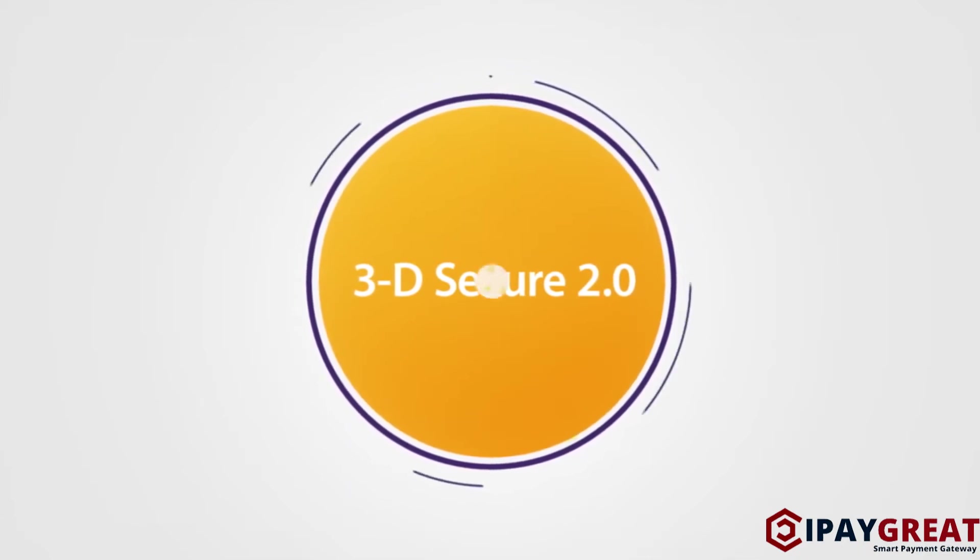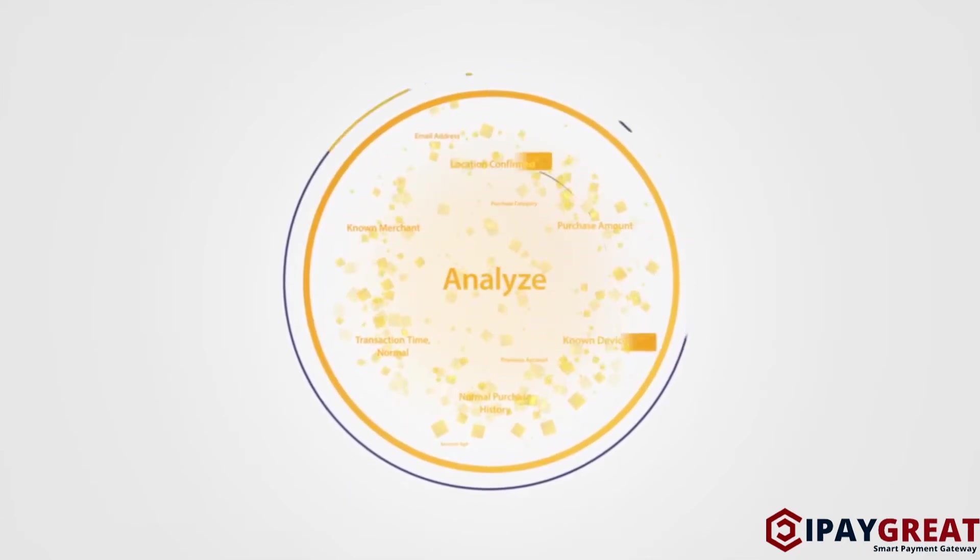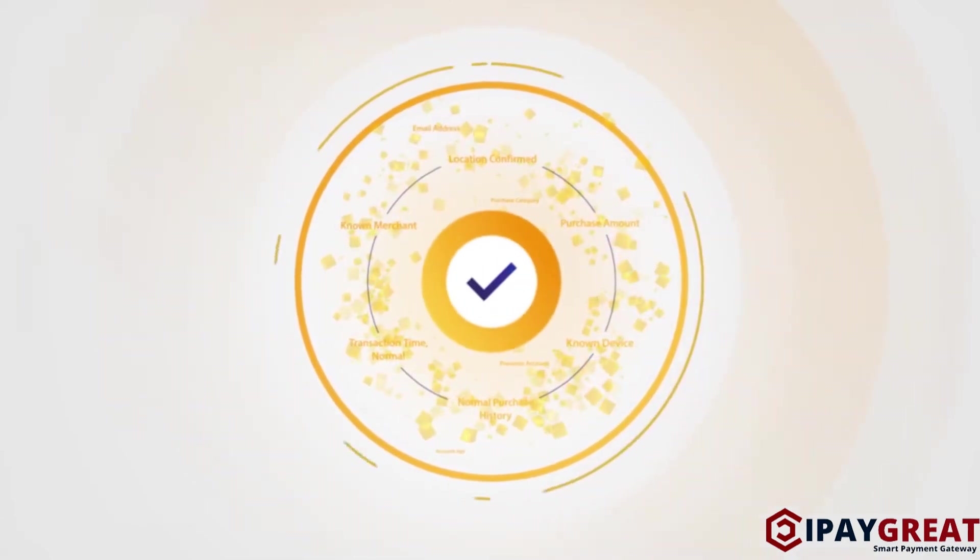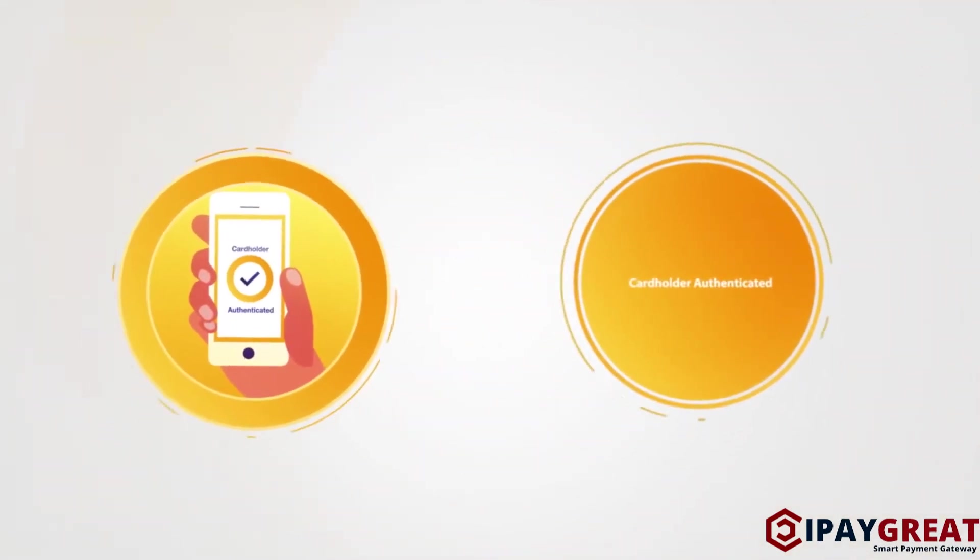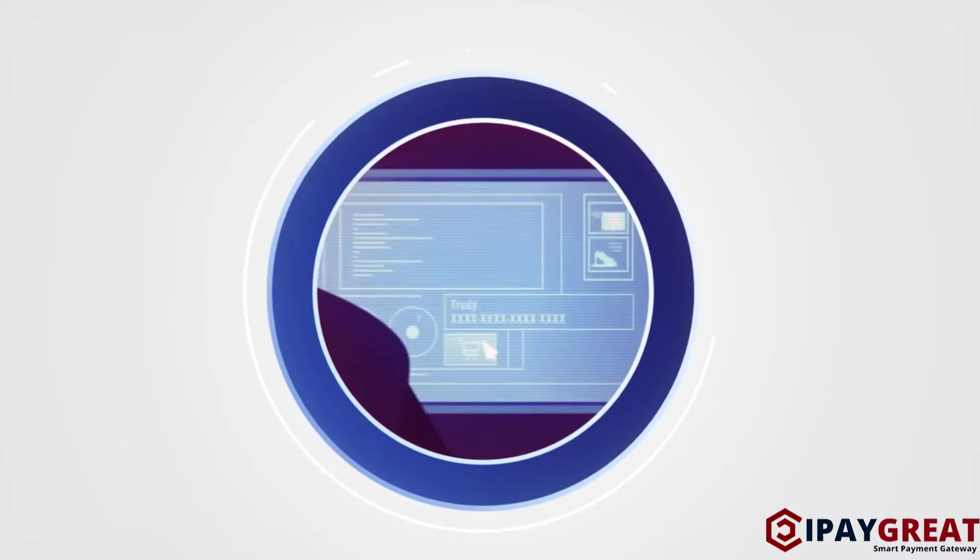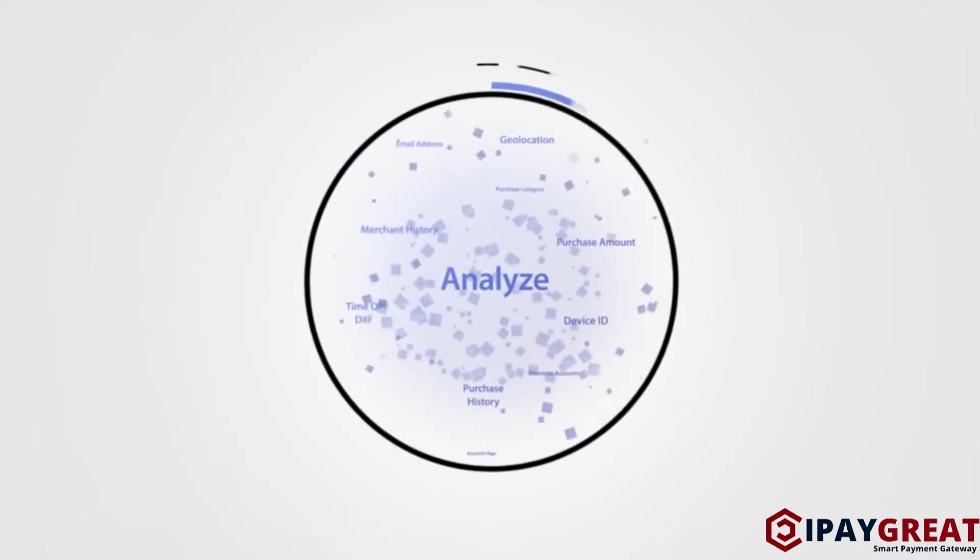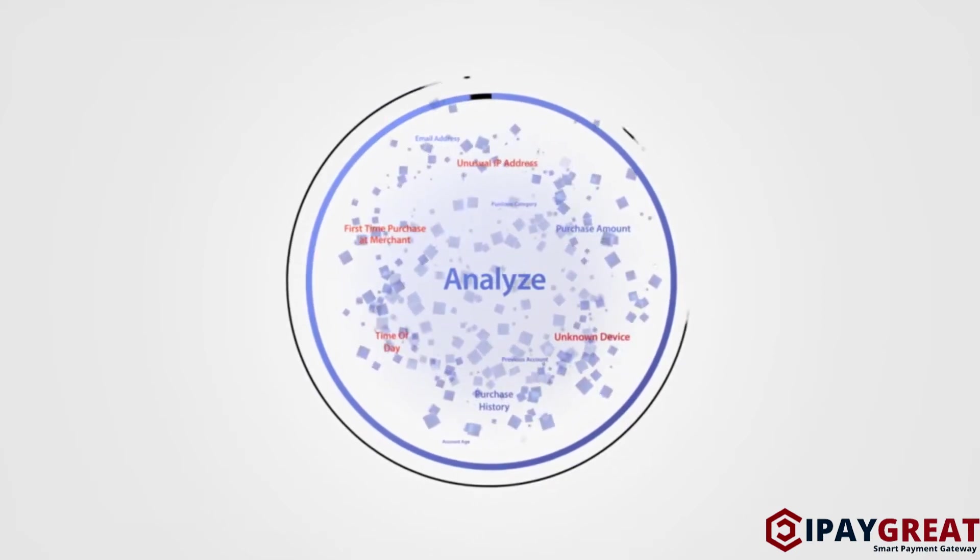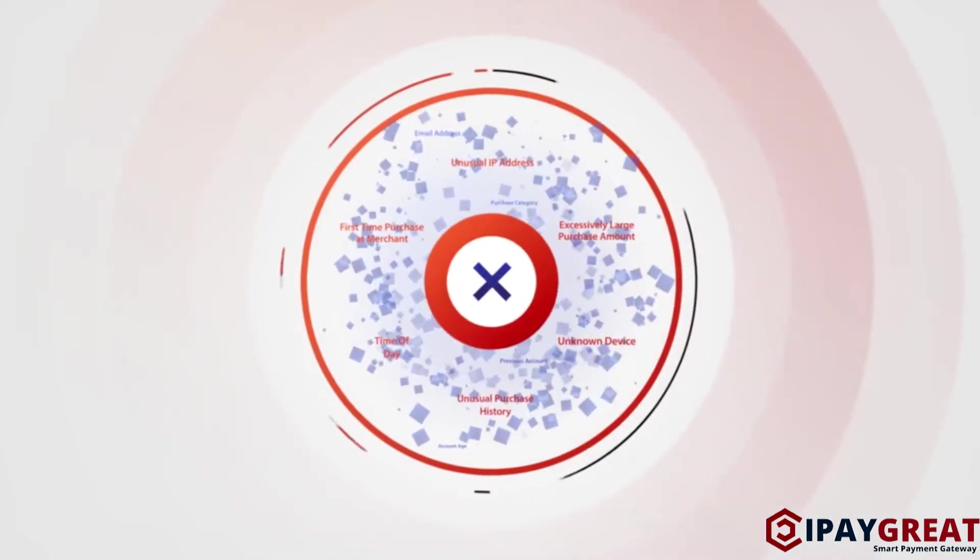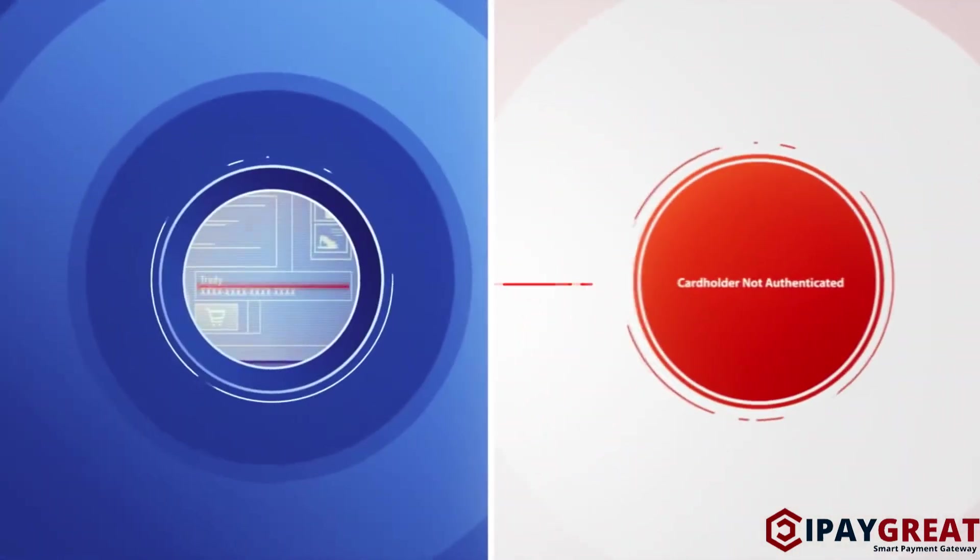3D Secure 2.0. 3D Secure 2.0 uses contextual data sharing between the merchant and issuer. Using 10 times more data, 3D Secure 2.0 delivers an additional layer of security and streamlines the checkout process by analyzing that data behind the scenes.